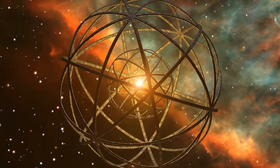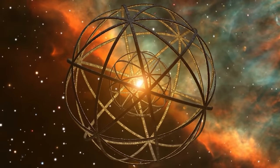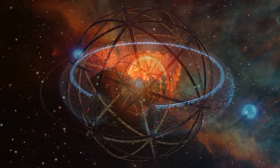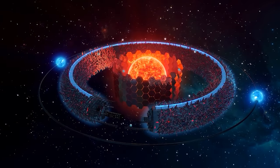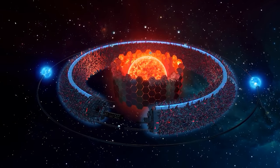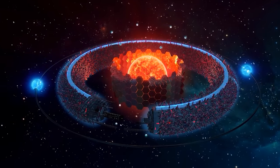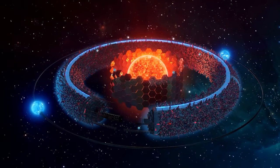However, it would be inefficient and unrealistic to completely cover a star with such a sphere, and other structures have been proposed as being more realistic, such as a Dyson ring installed around a star, or a Dyson swarm consisting of multiple Dyson rings.